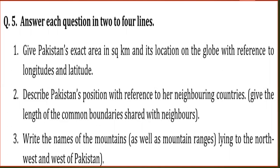Question 3: Write the length of the mountain ranges to the northwest and west of Pakistan. The answer is given on page 48. Western mountain ranges include the Kirthar Range, Sulaiman Range, Waziristan Range, and Toba-Kakar Range. Northern mountain ranges include the Hindukush Range. You will write this answer from page 48.